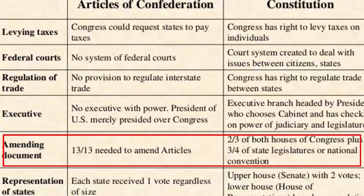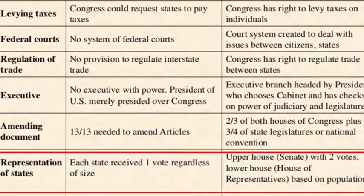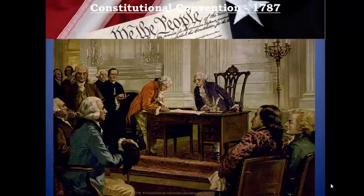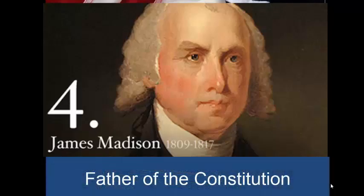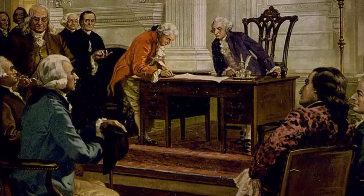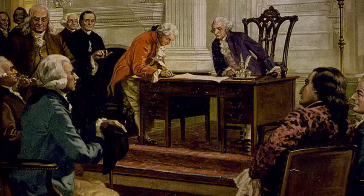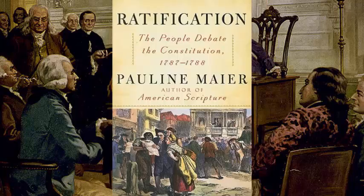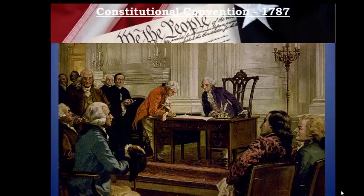The final document was put together and written by James Madison, also known as the father of the Constitution. It was signed by most of the delegates, but some who were not happy refused to sign — they thought it was too much power. A big fight was still ahead because the states would now be asked to ratify the Constitution. The states were reluctant to give up all this new power to the national government, and that is where we'll pick up next time with ratifying the Constitution.